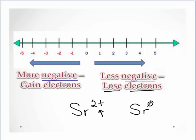Well, it's less negative. If it's less negative, that means I must have lost electrons. And in this case, I must have lost two electrons.